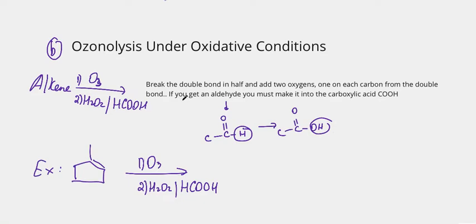But there is something extra that you have to be aware of. If you get an aldehyde at the end—and an aldehyde basically means C double bond O at the end of the chain—you will have to make it into a carboxylic acid. So for example here I have an aldehyde. Instead of hydrogen, I will have to replace it with OH to make it into carboxylic acid.